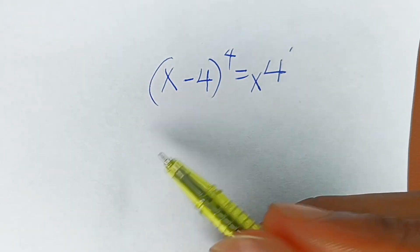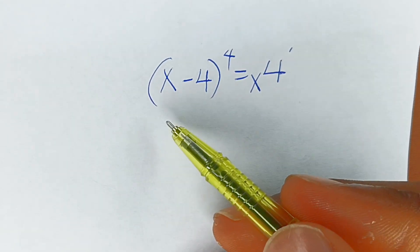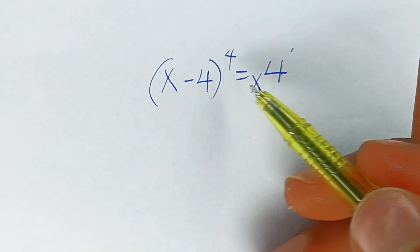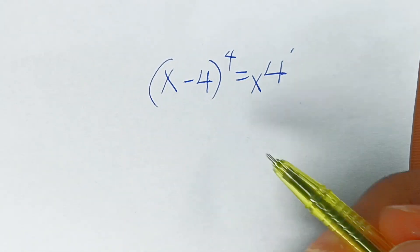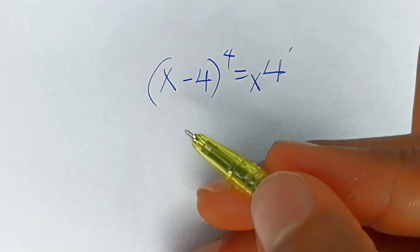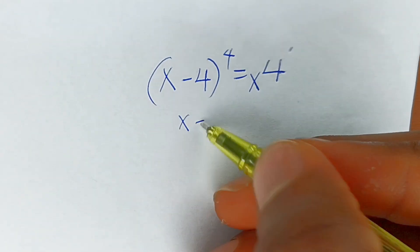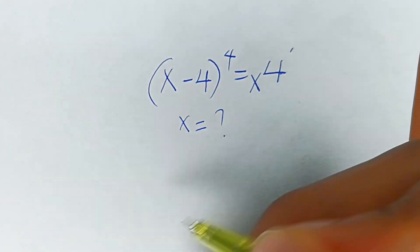Let's solve this together. It says x to the power of (x minus 4) which is raised to the power of 4, is equal to x to the power of 4. We're going to solve for x in this equation.